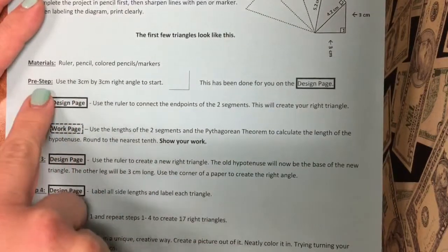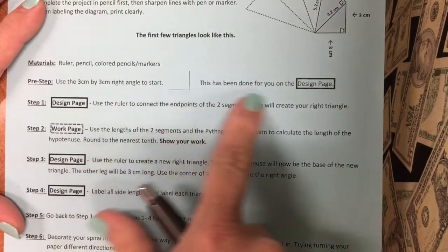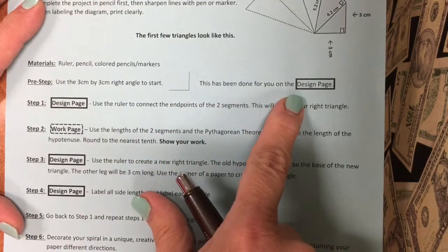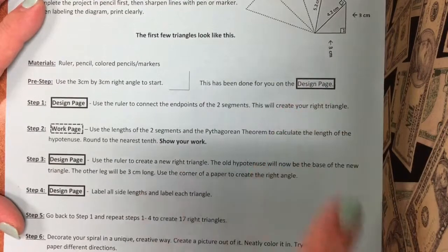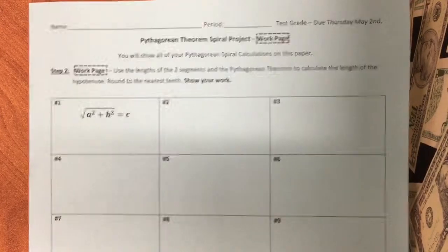The first step — or the pre-step — is to use the 3x3 right angle to start, and this has been done for you on the design page. You're going to have this design page for your picture, and you're going to have your work page, which is the back of this — this is where you're going to show your work. On the design page, there is a 3x3 right angle here, so this is 3 centimeters by 3 centimeters.